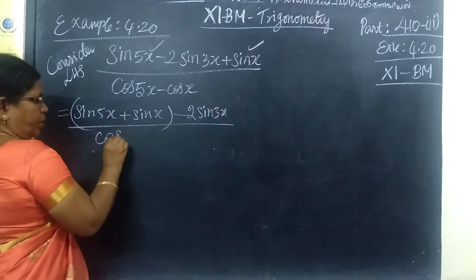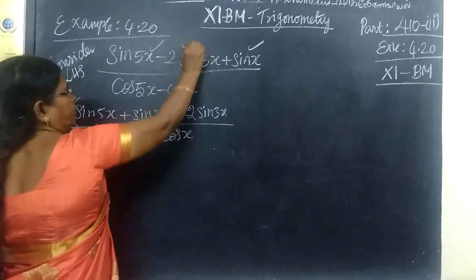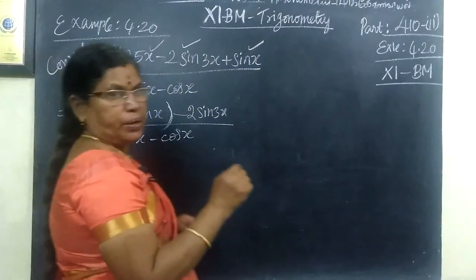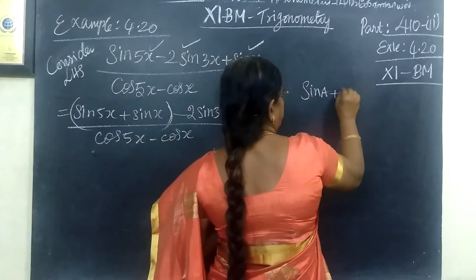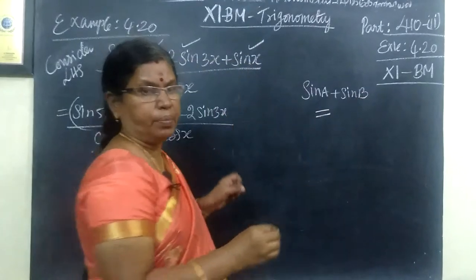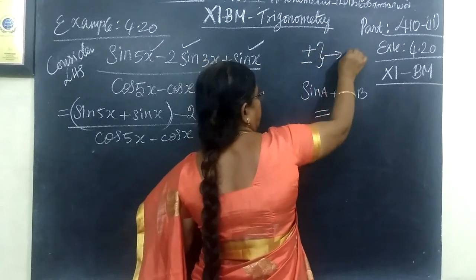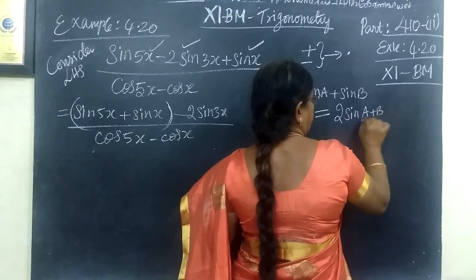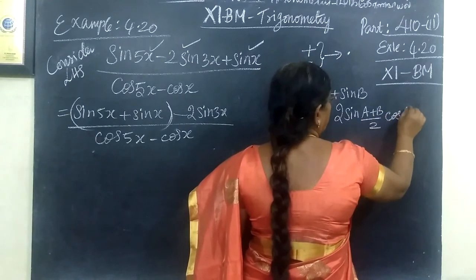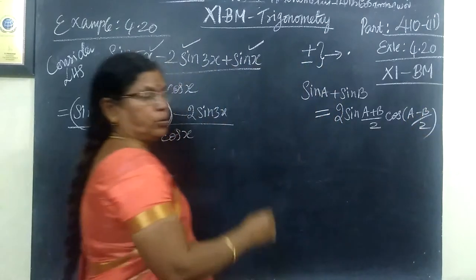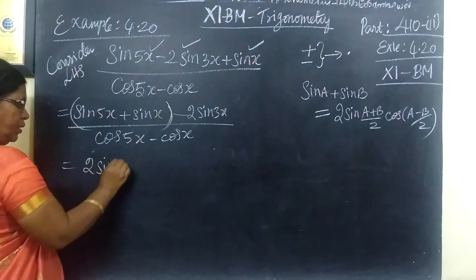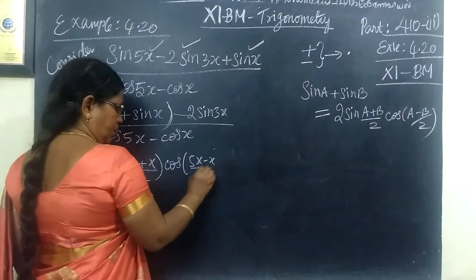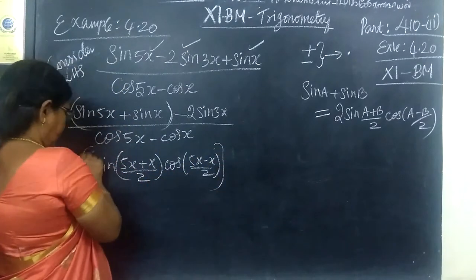Why are we considering first term and last term? You can remember the formula sin a plus sin b. Plus or minus? What do you do? Product. So this formula is 2 sin (a plus b by 2) into cos (a minus b by 2). So this is what you do. Then this will appear.